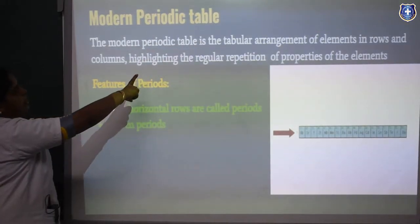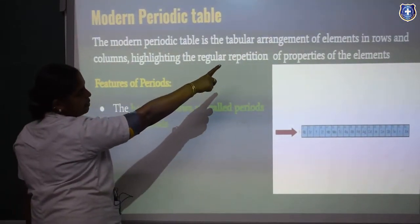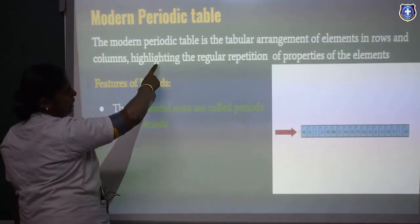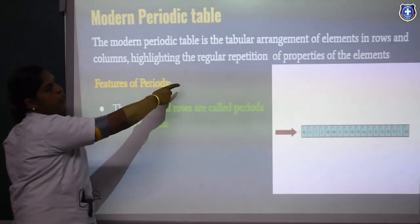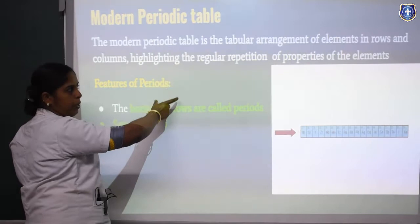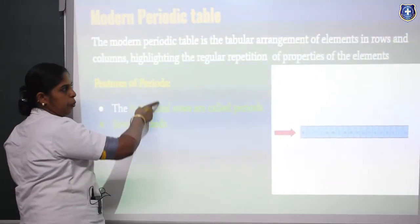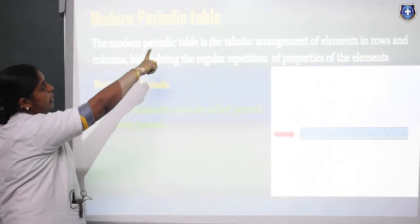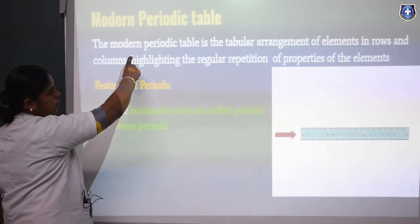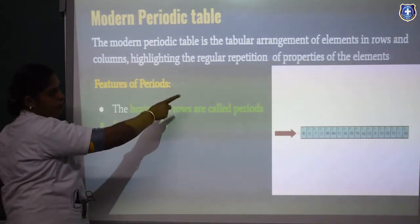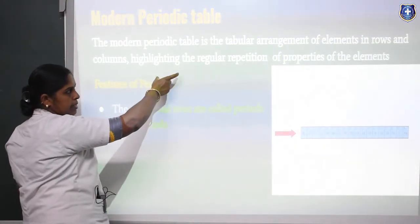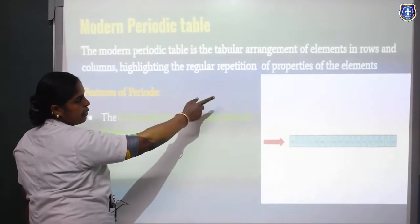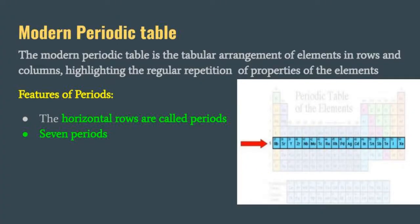The modern periodic table is a tabular arrangement of elements in rows and columns highlighting the regular repetition of properties of elements. Similar elements are grouped together. The elements are arranged in order of increasing atomic number — from left to right, atomic number increases from 1 onwards.